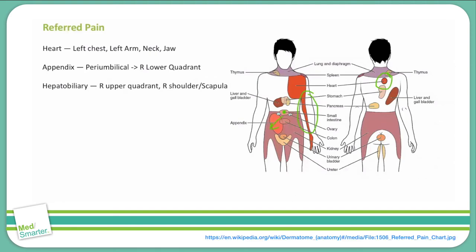Next up is pain from the liver or gallbladder. This pain is classically felt in the right upper quadrant, which is anatomically where the hepatobiliary system is located. This pain can also be felt in the right shoulder and right scapular area. It's important to know that this is due to diaphragmatic irritation — the liver and gallbladder are located right under the diaphragm, so in cases of hepatitis or cholecystitis, the diaphragm can become inflamed.